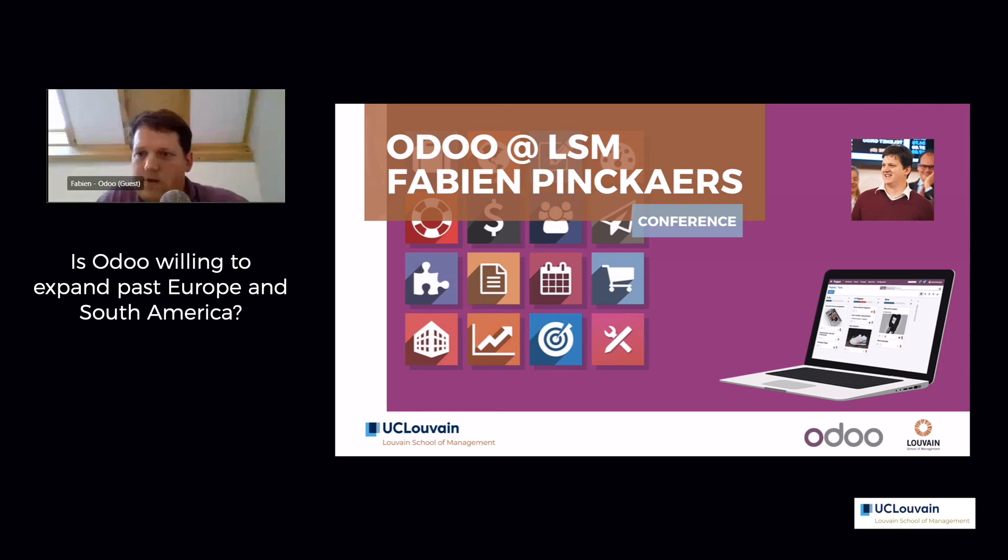Is Odoo willing to expand past Europe and South America? We are actually all around the world. We already have partners in 160 countries all around the world. But in our own companies, we have North America. We have a company in Buffalo, New York, and San Francisco. We have Asia. We have a company in China, one in Hong Kong, and one in India.